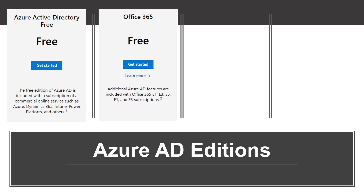The Office 365 apps edition allows you to do everything included in the free version, plus self-service password reset for cloud users and device write-back, which offers two-way synchronization between on-premises directories and Azure Active Directory. This edition is included in subscriptions to Office 365 E1, E3, E5, F1, and F3.